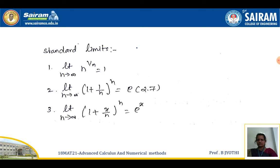Some standard limits we will be using: first, limit as n tends to infinity of n^(1/n) = 1; second, limit as n tends to infinity of (1 + 1/n)^n = e ≈ 2.718; third, limit as n tends to infinity of (1 + x/n)^n = e^x. These are the standard limits which we will use to solve the problems.